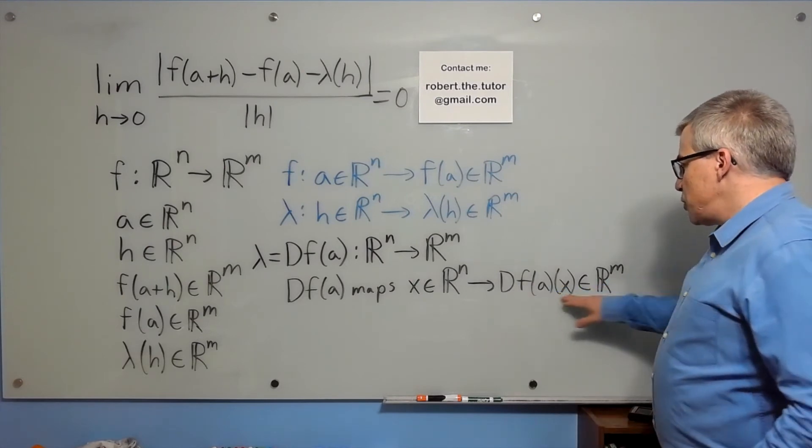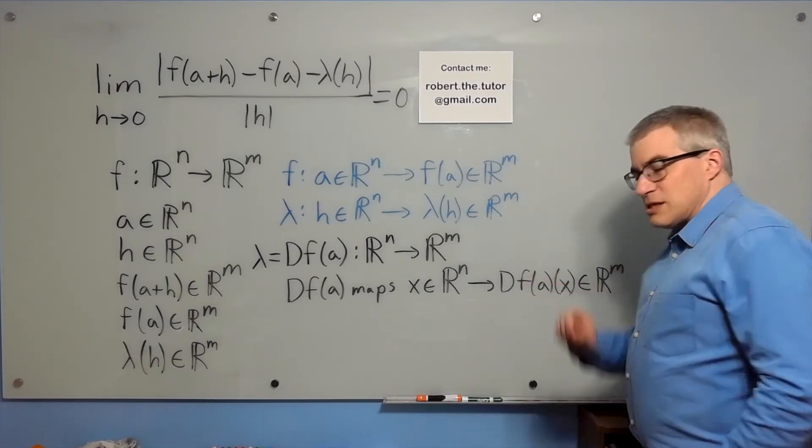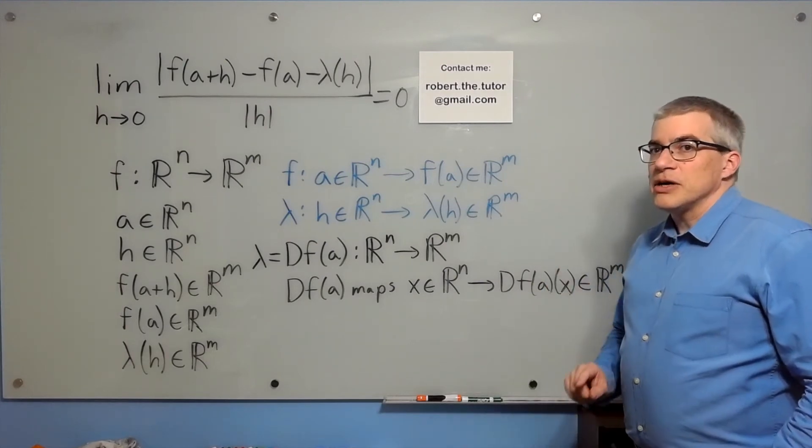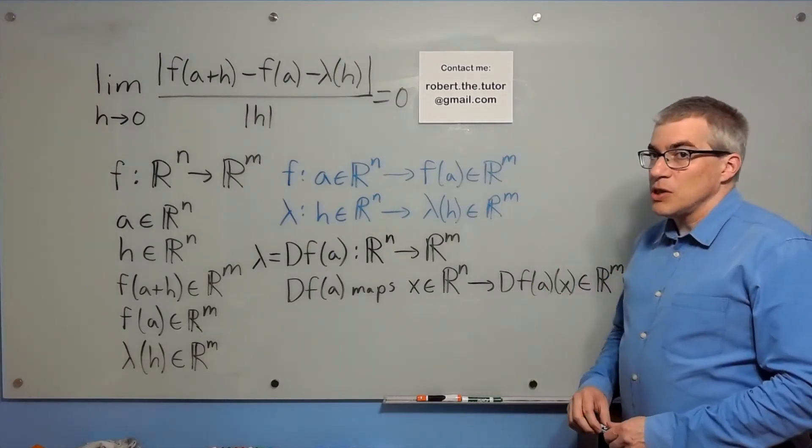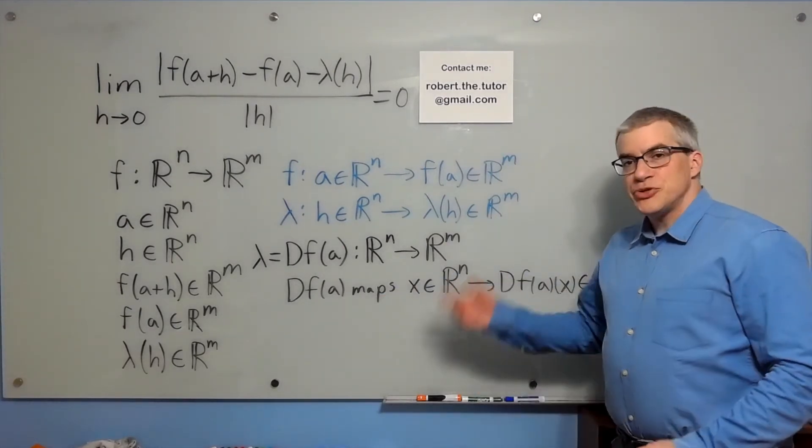Because this expression here is linear as a function of x, it is not linear as a function of a. That was a source of a lot of confusion for me. Now this df of a is the abstract object.